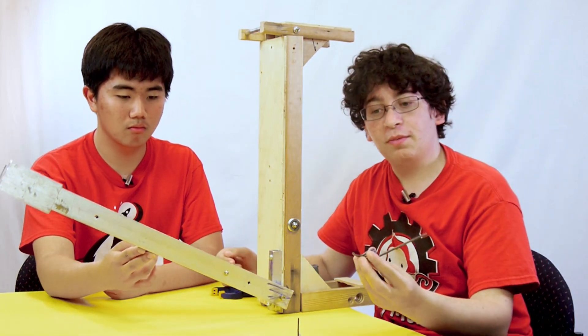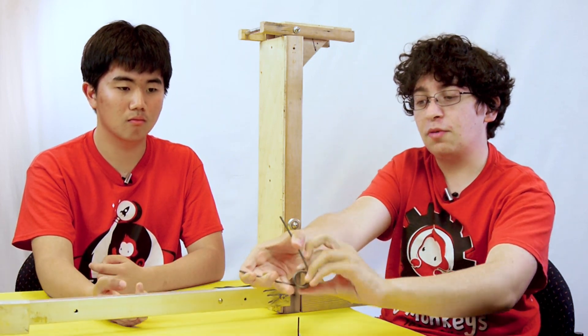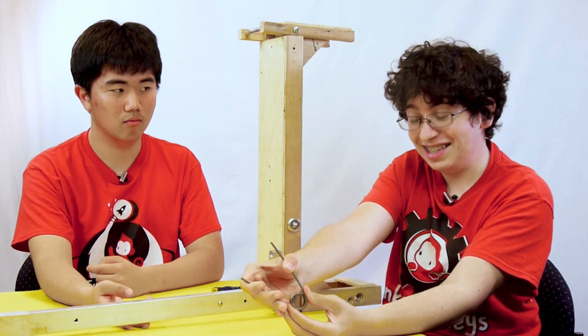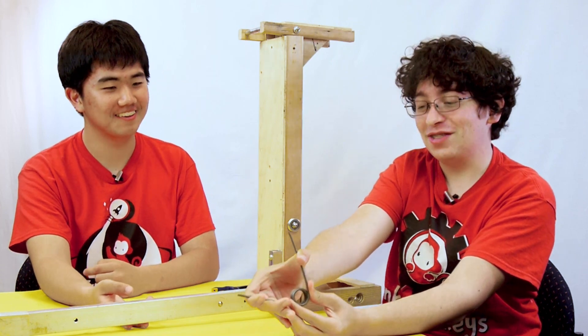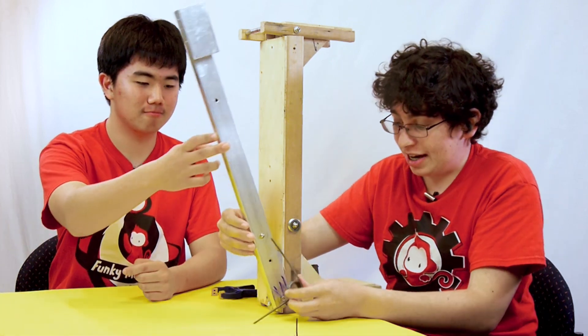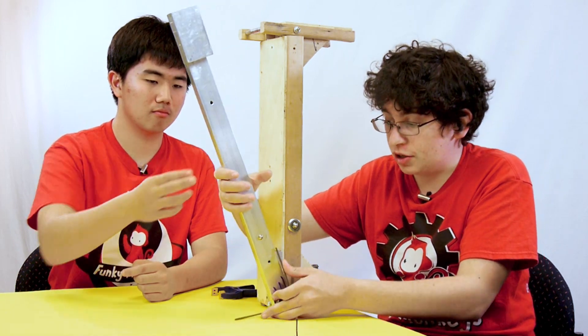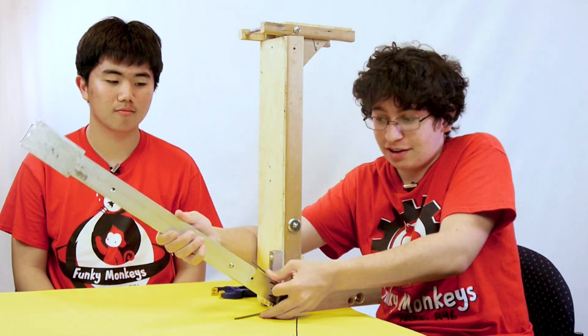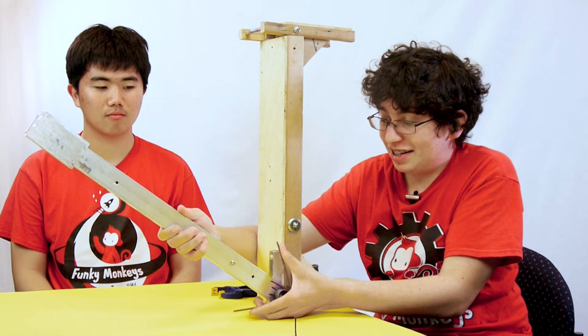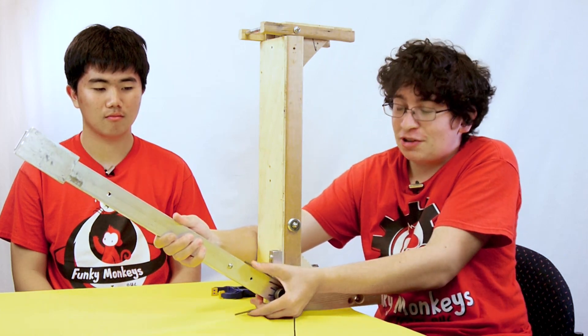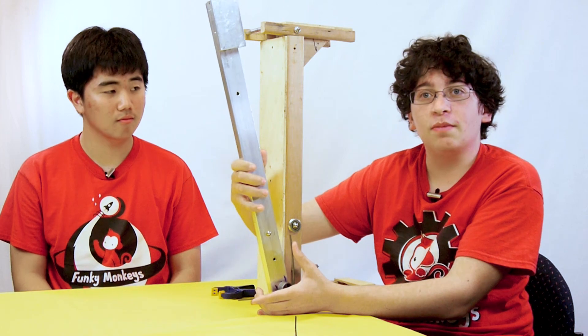Another method of counterbalancing is with a torsion spring like this, which provides a torque when you squeeze the two arms together. So with this, you could attach it to the base of, or the pivot point of the arm like this, and as the arm would go down, it would compress the spring. I can't really simulate it, it's a pretty strong spring. We'd compress the spring as it goes down and decompress as it goes up.